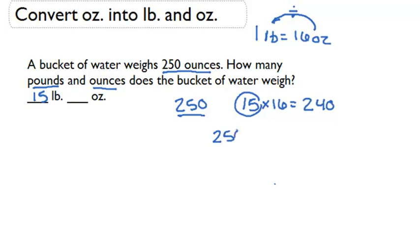I'm going to take my 250, subtract 240 from it because that's how much I took away in 15 pounds, and I'm going to find that I have 10 ounces left over. So my answer is 15 pounds and 10 ounces.